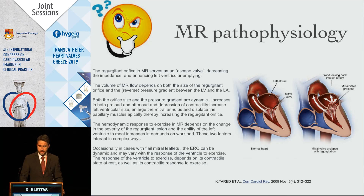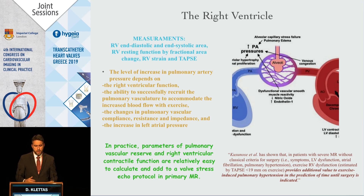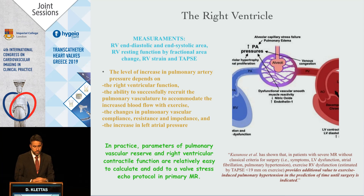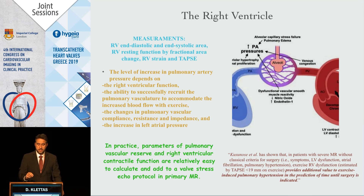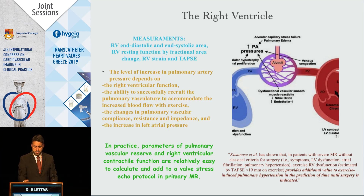It is not only the LV and the mitral valve. The right ventricle was found to play a crucial role. The level of increase in pulmonary artery pressure relates to right ventricular function — the ability to successfully recruit the pulmonary vasculature to accommodate increased blood flow with exercise. Changes in pulmonary vascular compliance and resistance play a crucial role. A recent study showed that TAPSE less than 19 provides additional information predicting the time until surgery is indicated.